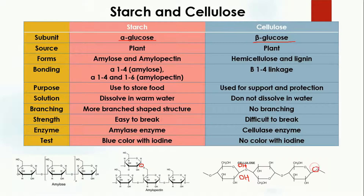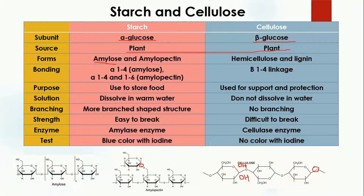Starch and cellulose are both present in plants, so if you want to obtain these two compounds you can take them from plants. The different forms of starch are amylose and amylopectin. In the case of cellulose, hemicellulose and lignin are different forms present in cellulose.